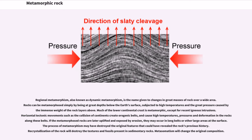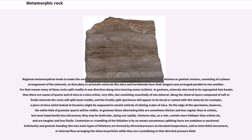The process of metamorphism may have destroyed the original features that could have revealed the rock's previous history. Recrystallization of the rock will destroy the textures and fossils present in sedimentary rocks. Metasomatism will change the original composition. Regional metamorphism tends to make the rock more indurated and at the same time to give it a foliated, schistose or gneissic texture, consisting of a planar arrangement of the minerals, so that platy or prismatic minerals like mica and hornblende have their longest axes arranged parallel to one another.